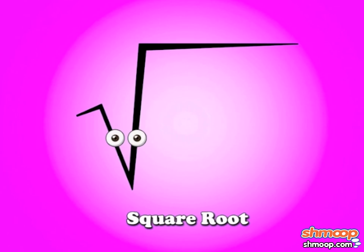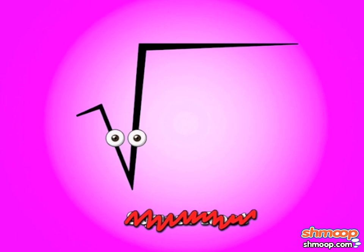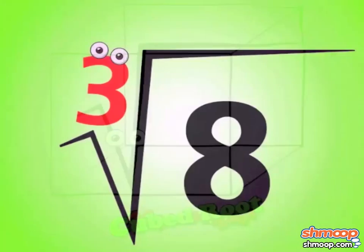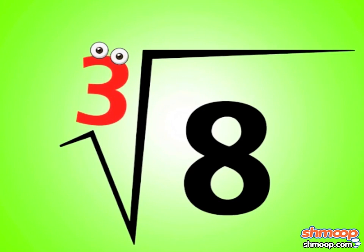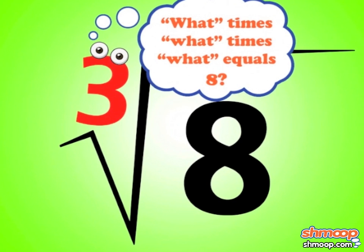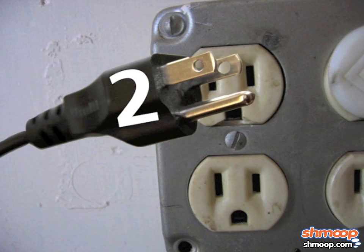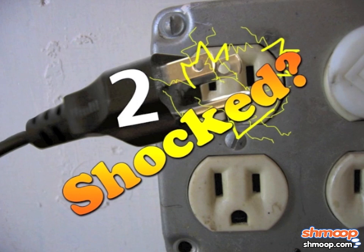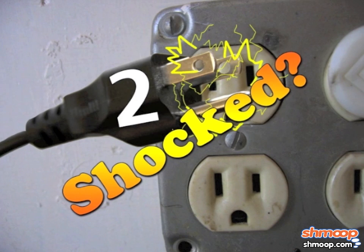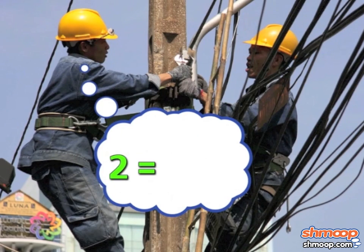Not every root is a square root. You can also have a cubed root, like this one. A three is telling you there is a number that will fit this formula. You can plug in two to make this equation complete, so we can say that two is the cubed root of eight.